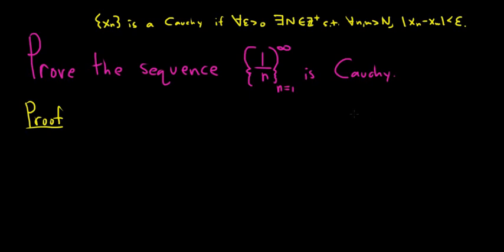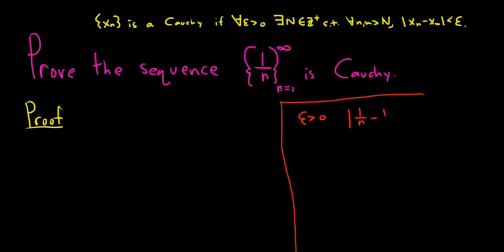Before we prove it, I'm going to do the scratch work on the side. Given an epsilon greater than 0, we want the distance between 1 over n and 1 over m to be less than epsilon. We can use the triangle inequality here: the absolute value of 1/n minus 1/m is less than or equal to the absolute value of 1 over n plus the absolute value of negative 1 over m. Since everything is positive, this is the same as 1 over n plus 1 over m, and we want this to be less than epsilon.